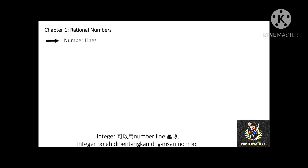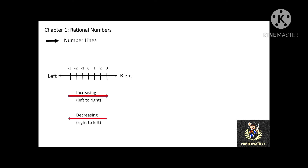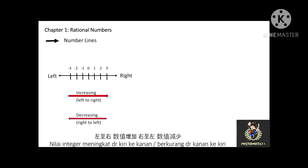Another secret of this chapter is integers can be represented on a number line. You can look at the number line. From left to right, the value of integers are increasing. And from right to left, the value of integers are decreasing.